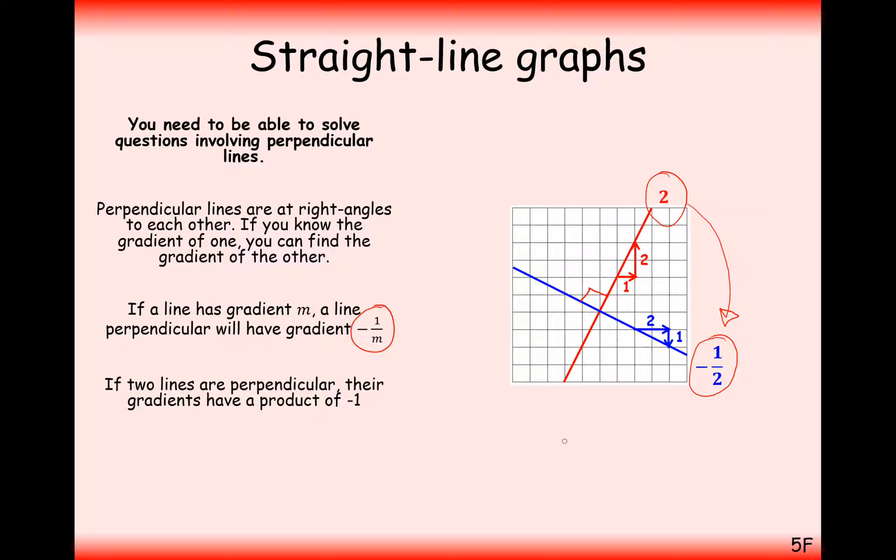What we could also say is that these two lines here will multiply together to make minus one. So the two gradients that are perpendicular to each other must times to make minus one.